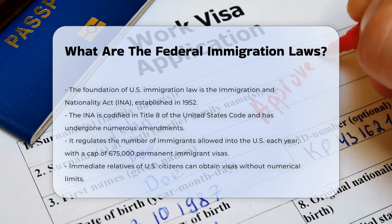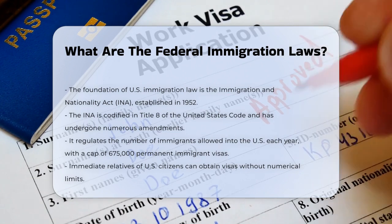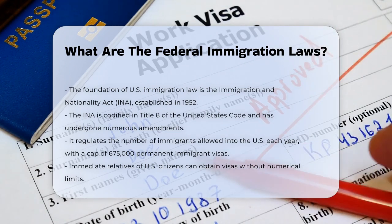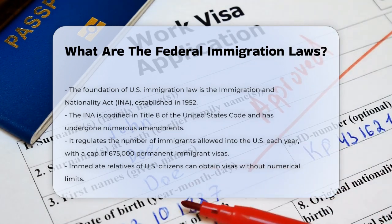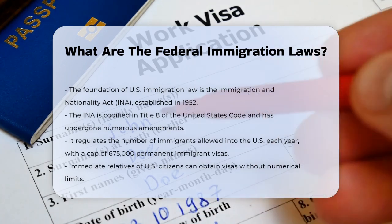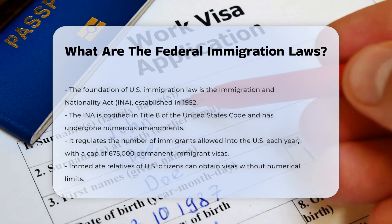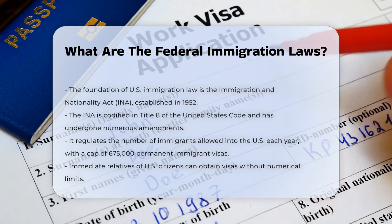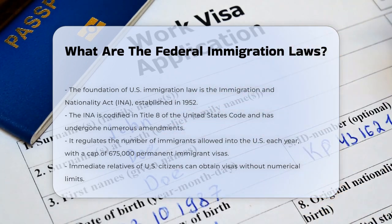However, there's no limit on the number of visas for immediate relatives of U.S. citizens, such as spouses, parents, and children under 21. There are several types of immigrant visas. Immediate relative visas are for close family members of U.S. citizens.